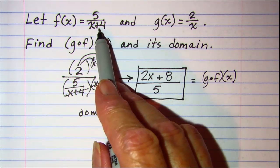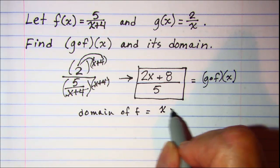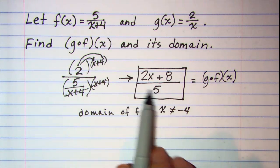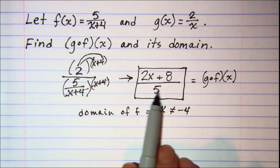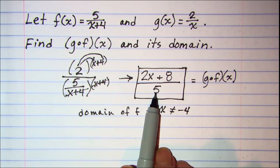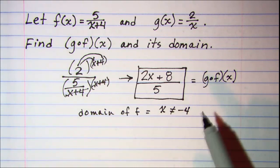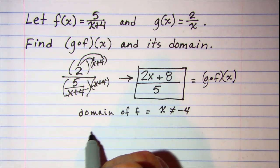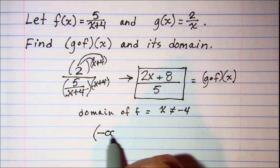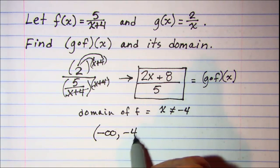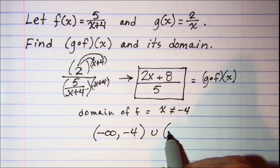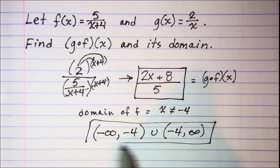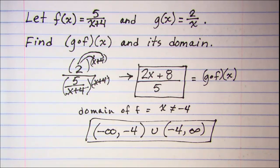x plus 4 cannot equal 0, which means x cannot equal negative 4. And then as far as our composition function, we don't have any possibility of 0 in the denominator, so my domain is just going to be the domain of f. So in interval notation, that is negative infinity up to negative 4, union negative 4 to infinity.